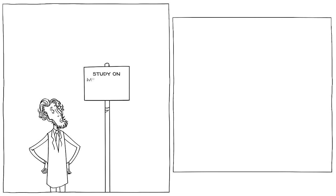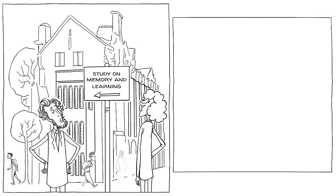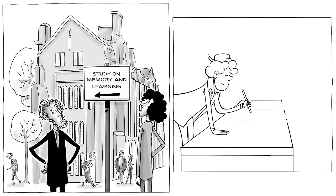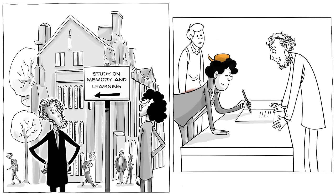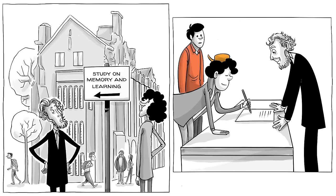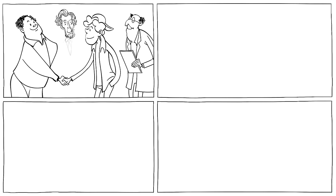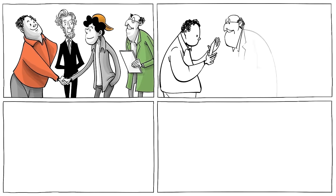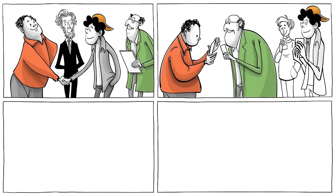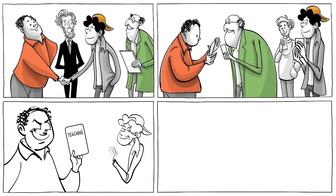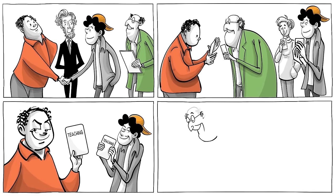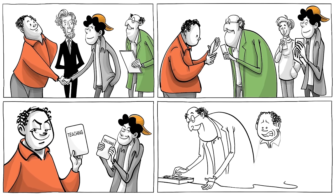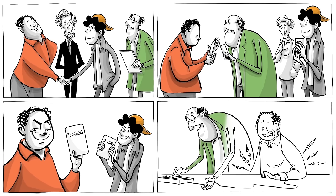Milgram then advertised his experiment as a study on memory and learning at the campus of Yale University. People signed up without any idea of what they were really getting themselves into. The experiment began with the volunteers meeting the other participants. The volunteers then pulled a card to draw their role. Little did they know that they could only draw the teacher. Next, they would be given a sample of a light electric shock in order to experience first-hand what the others would have to go through.